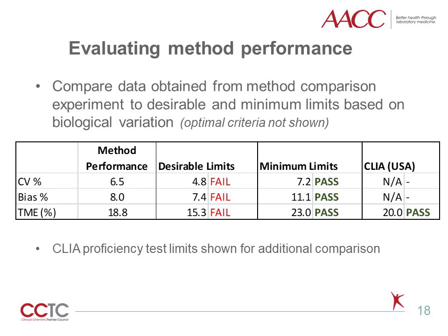By way of comparison, the error limit for ALT enzyme is plus or minus 20% based on CLIA proficiency testing in the United States. Whether such limits are greater than, less than, or equal to biological variation goals depends on the specific test analyte. Improved alignment of performance limits across clinical tests may occur if the biological variation approach is adopted by external quality assessment providers or used within the legal regulatory environment.